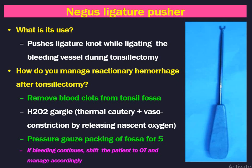How do you manage reactionary hemorrhage after tonsillectomy? Bleeding can be classified as primary, reactionary, and secondary. Primary hemorrhage occurs during surgery. Reactionary hemorrhage occurs in the first 8 to 24 hours. Secondary hemorrhage occurs after 3 days due to infection. Management: remove blood clots from the tonsillar fossa, as clots lead to decreased muscle contraction. Hydrogen peroxide gargle helps vasoconstriction by releasing nascent oxygen. Apply pressure gauze packing in the fossa for 5 minutes. If bleeding continues, shift the patient to the operation theatre.